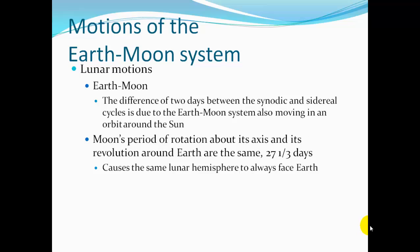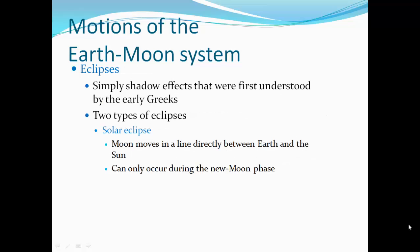The Moon's period of rotation on its axis and its revolution around the Earth are the same, 27 and a third days. This causes the same lunar hemisphere to always face the Earth. So we don't see the dark side of the Moon from Earth, so to speak.